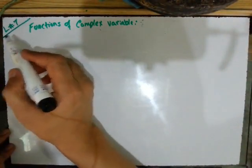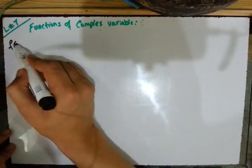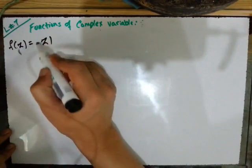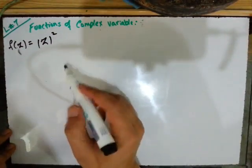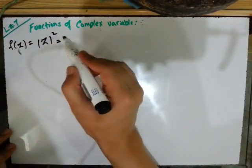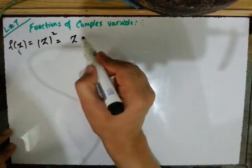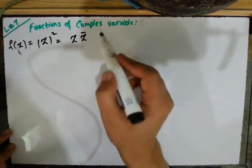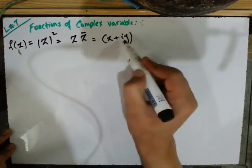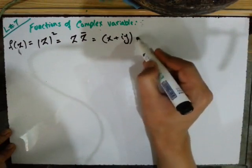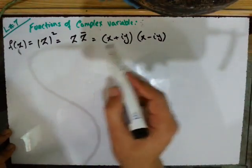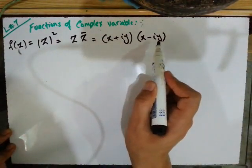Let's solve one more problem. For example, f(z) = |z|². From our earlier lectures on complex variable properties, we know that |z|² = z · z̄. Since z = x + iy, then z̄ = x − iy. Using the formula (a+b)(a−b) = a² − b², we get x² − (iy)².